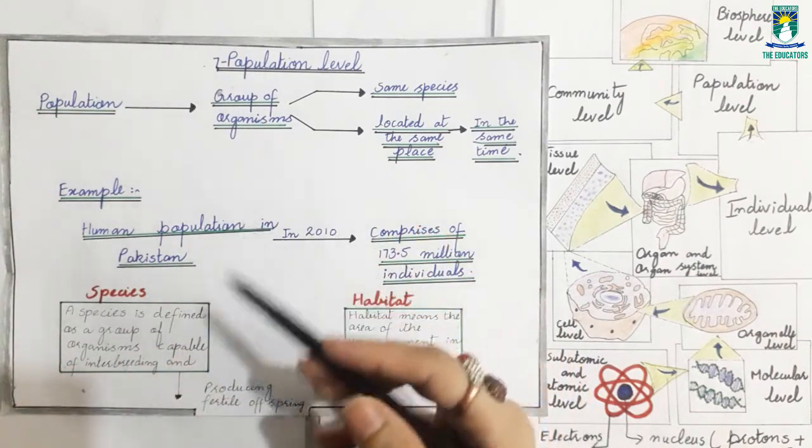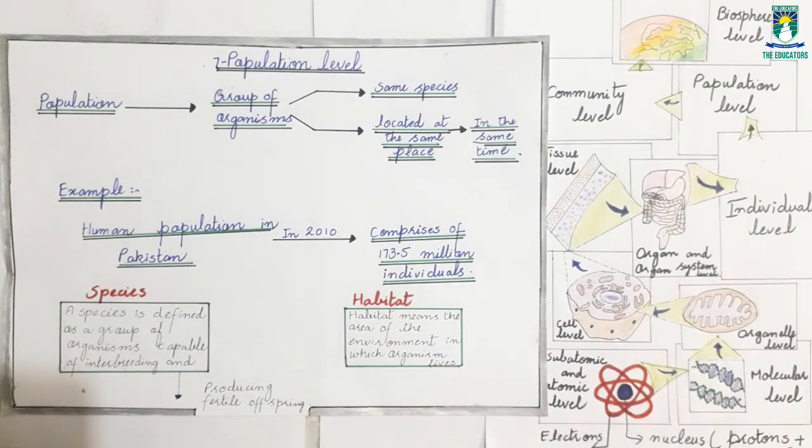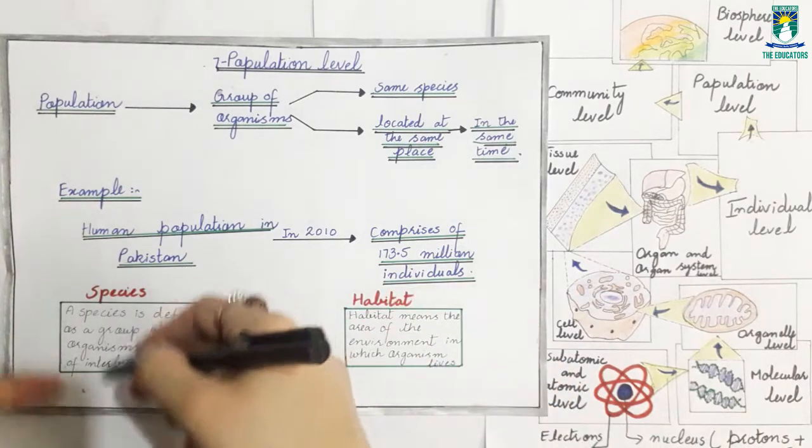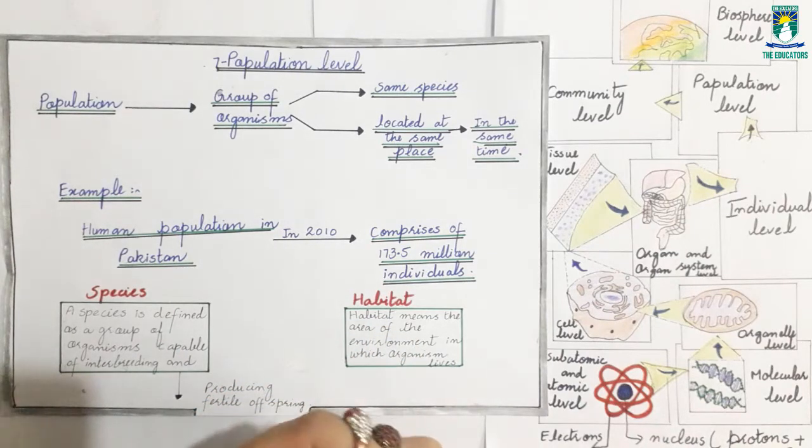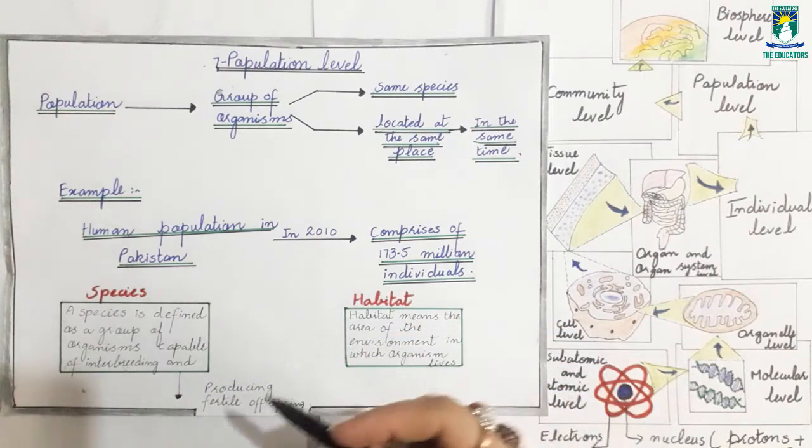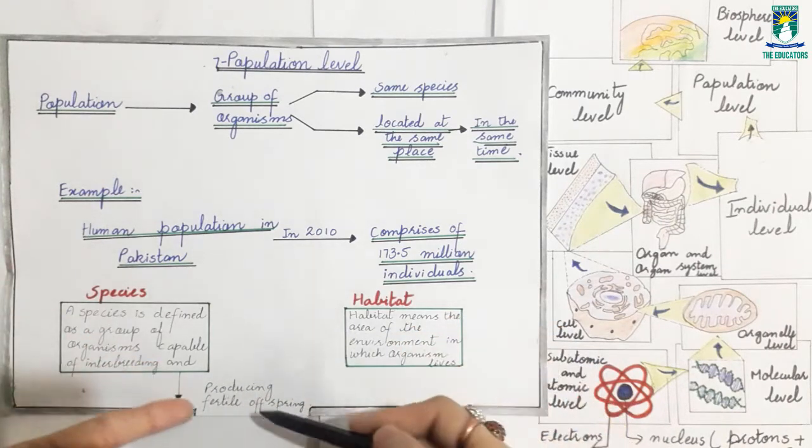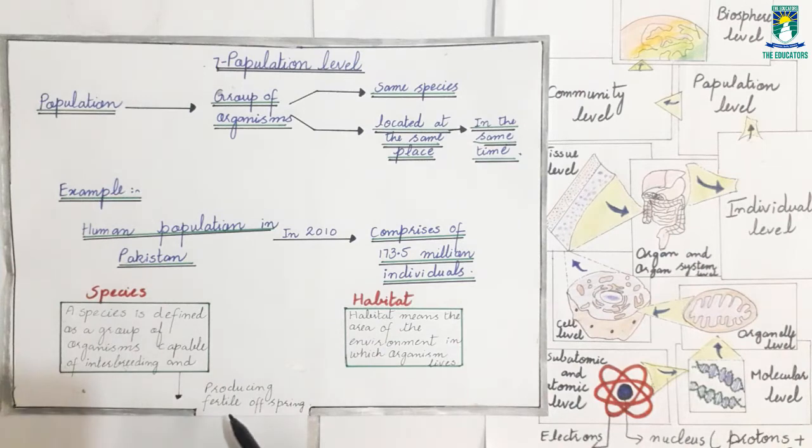These groups of organisms are interbreeding. What is the meaning of interbreeding? Interbreeding means reproduction. Then we use the term fertile offspring. Fertile means those organisms, those offspring which have the ability to reproduce.